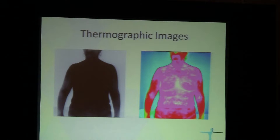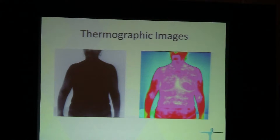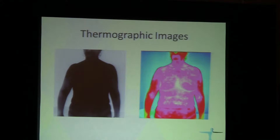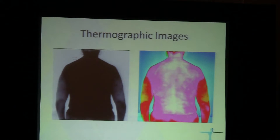Different infections can give you different profiles on thermography. This is a patient with chronic Bartonella infection who was diagnosed with Bartonella even before we confirmed her diagnosis with serology. Patients with Bartonella are prone to a so-called spider profile, because Bartonella induces proliferation of small blood vessels under the skin — you don't see them on examination, but you can clearly see them under thermography.